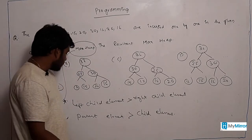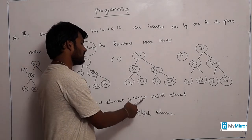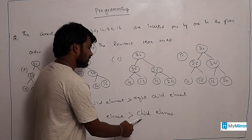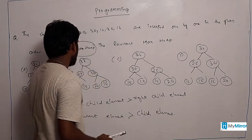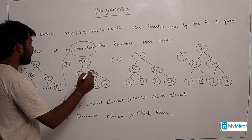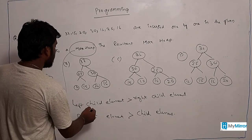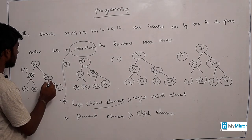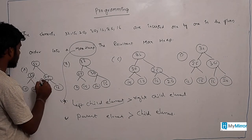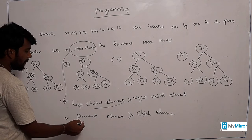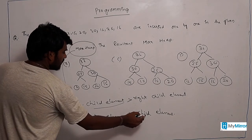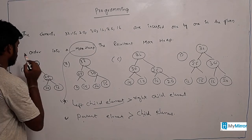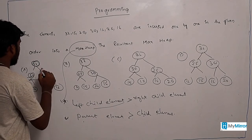In our max heap, the first condition is the left child element should always be greater than the right child element, and the parent element should always be greater than the child element. In the first option, the left child element is greater than the right child element — that is 30 greater than 25 — and the parent element is greater than the child element. So this condition is valid.